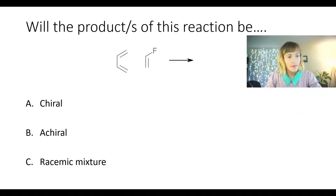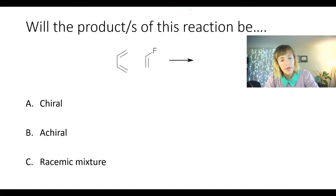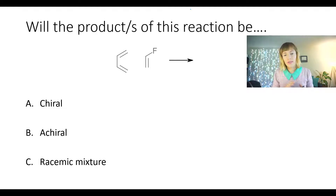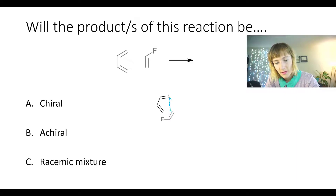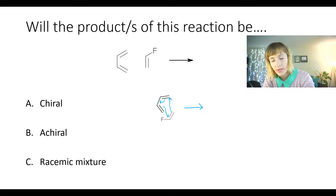Now moving on to our next problem. In this problem we are being asked about the products of the following reaction and whether they are going to be chiral, achiral, or a racemic mixture. The way that I would approach this problem is I would stack the dienophile either on top of the diene or on the bottom of the diene and see what comes out in the products. Let's start by stacking our dienophile on the bottom of the diene and draw our electron movement — these electrons coming to this carbon to make a sigma bond, these coming over here to make a new pi bond, and then these pi electrons coming to this carbon to make a new sigma bond.